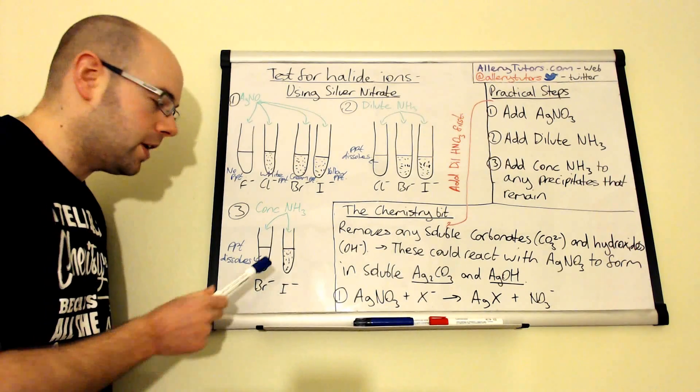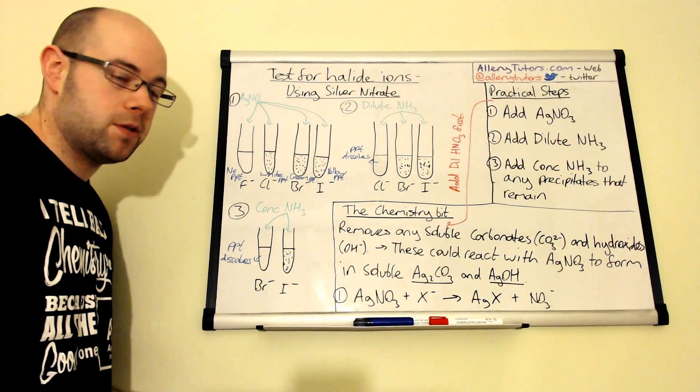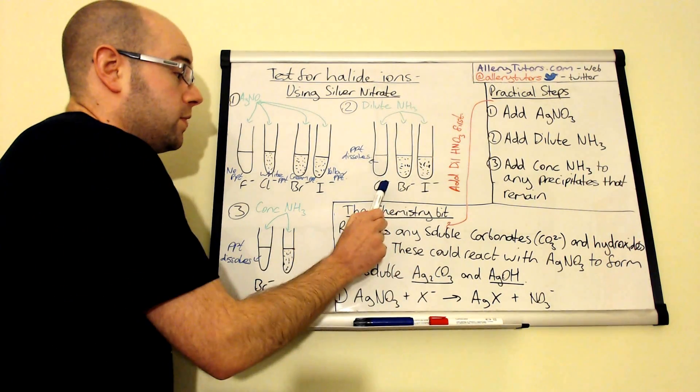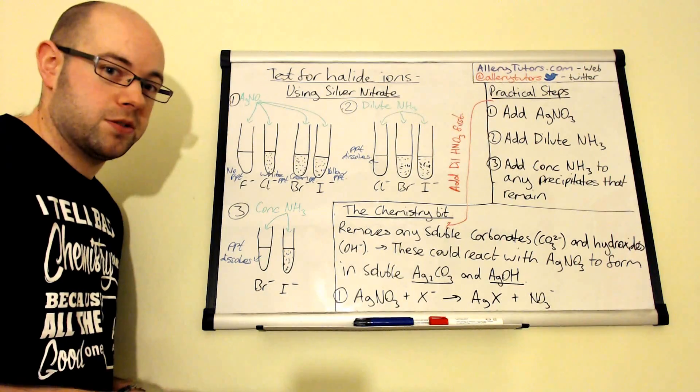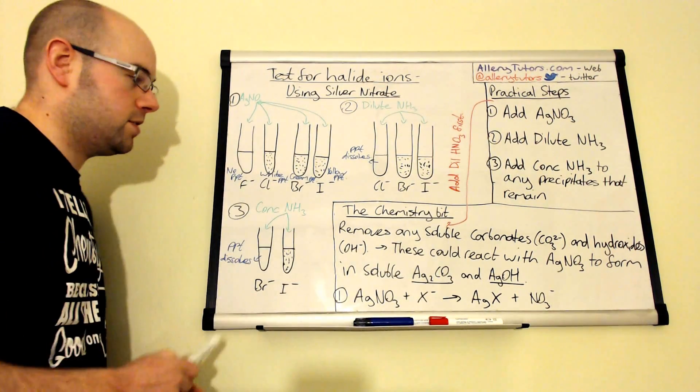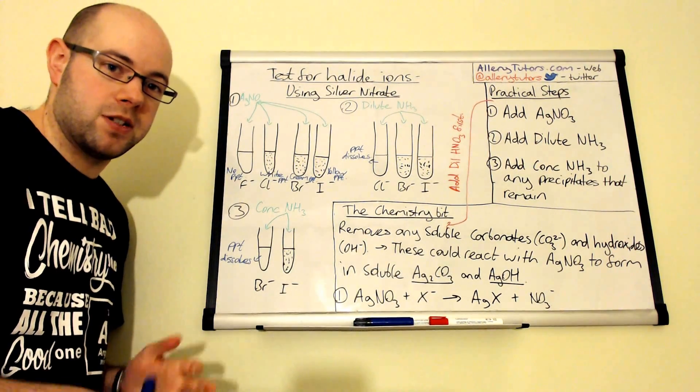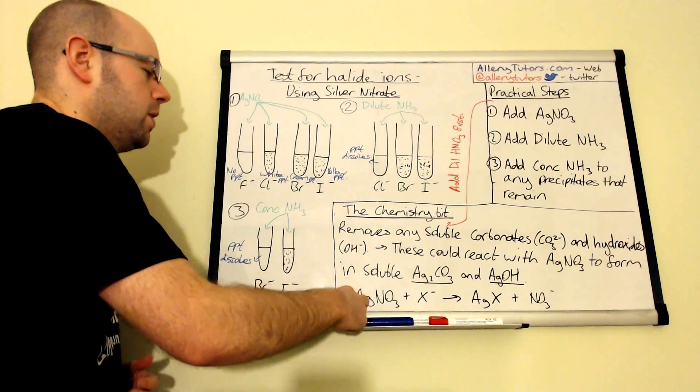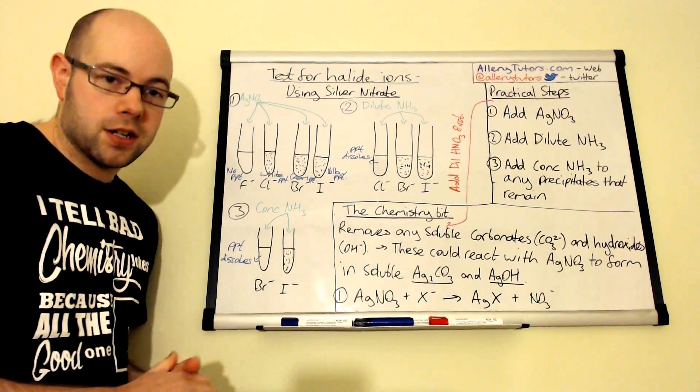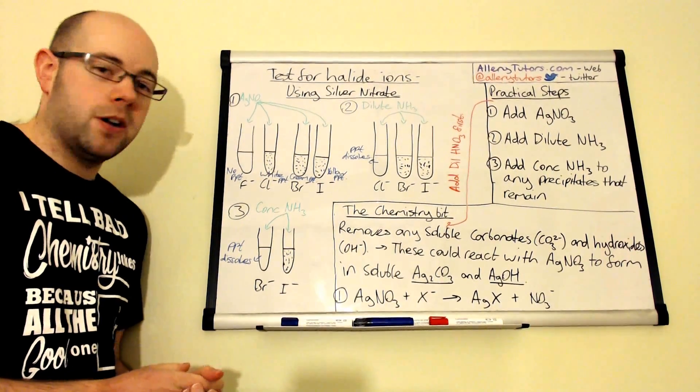Your silver chloride will dissolve with just dilute ammonia. And your silver fluoride is soluble anyway. It doesn't even need any ammonia. And that's why we don't get any precipitate formed in the initial step. But that's it. Hope that helps. Bye.